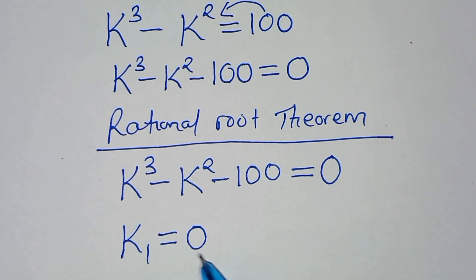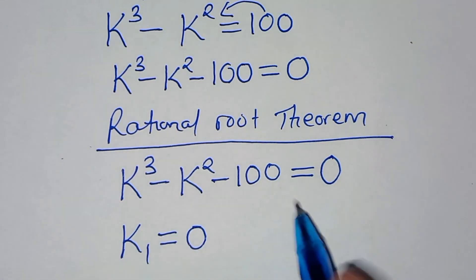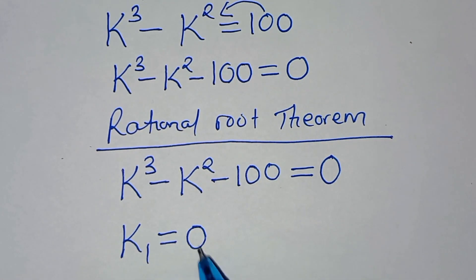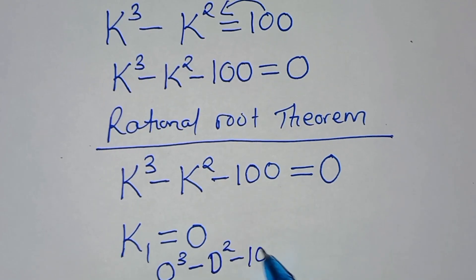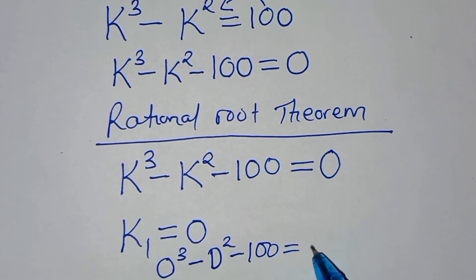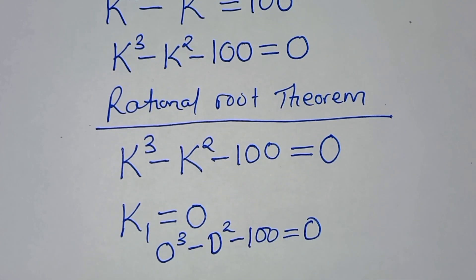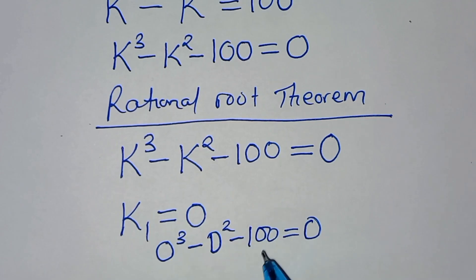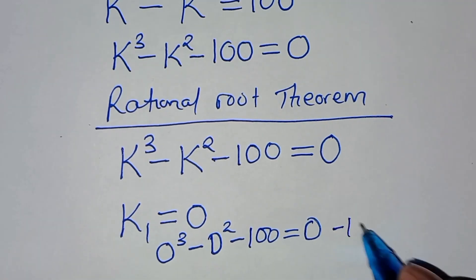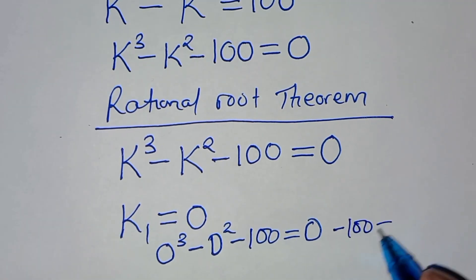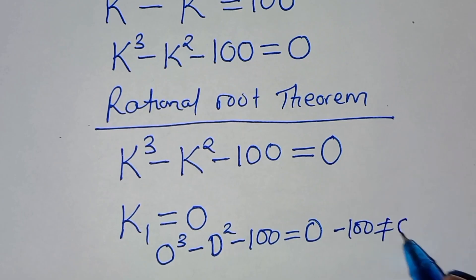Let's start with k₁ equal to 0. Substituting: 0³ minus 0² minus 100 equals negative 100, which is not equal to 0.